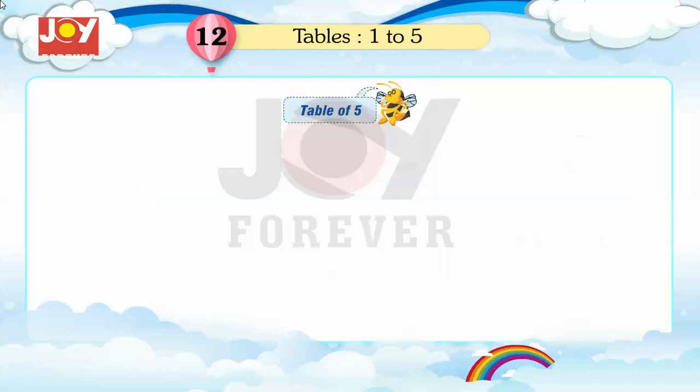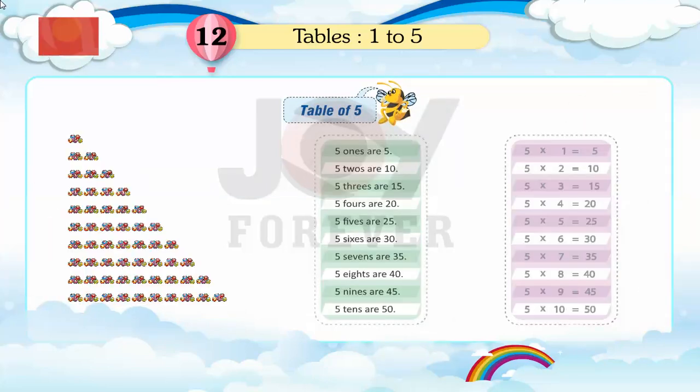Table of 5: 5 ones are 5, 5 twos are 10, 5 threes are 15, 5 fours are 20.